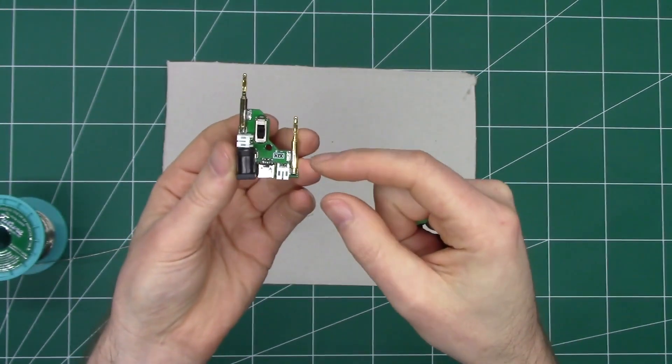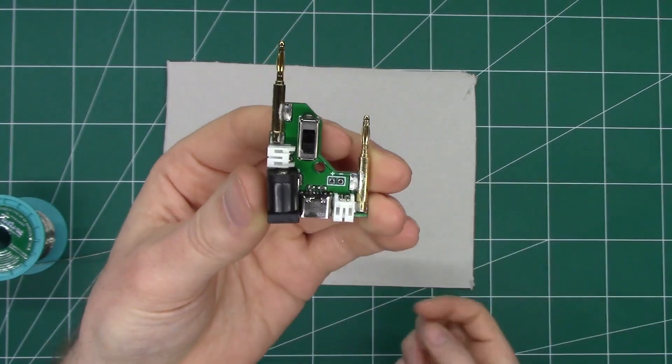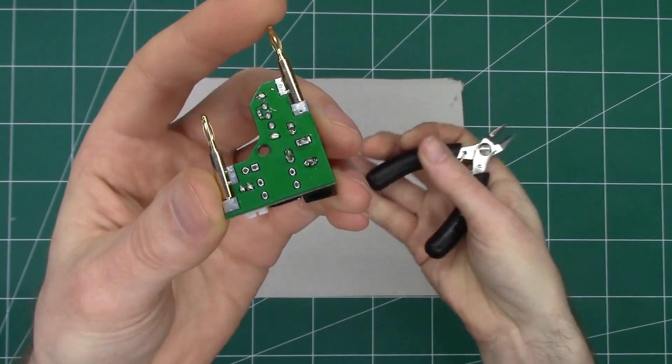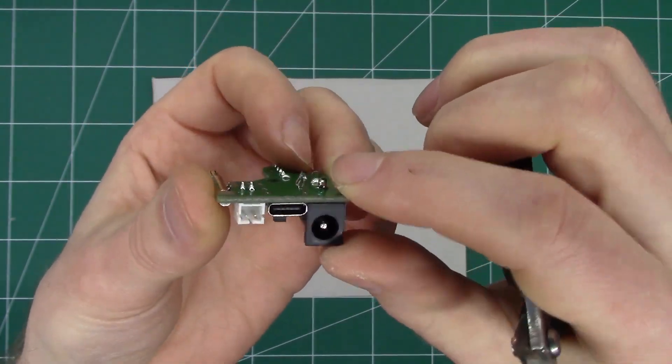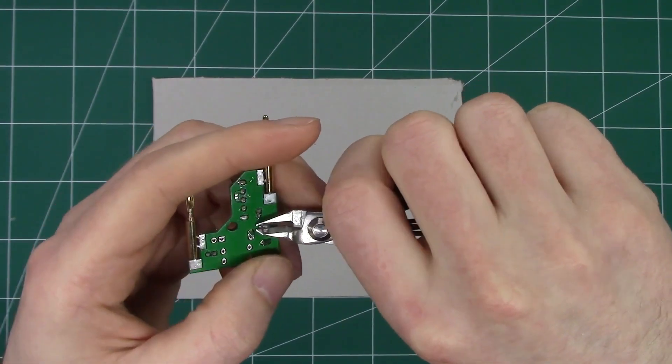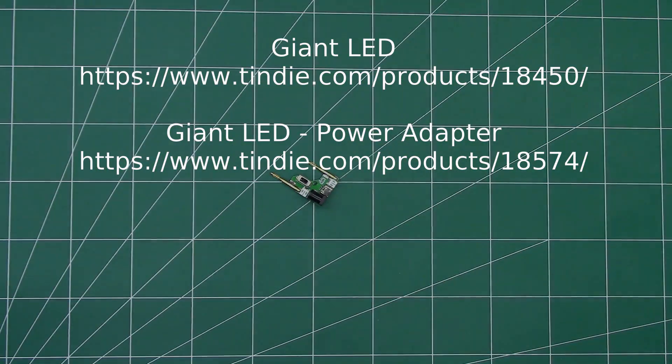After soldering, these wires can be cut off with a pair of side cutters. Thank you, bye bye.